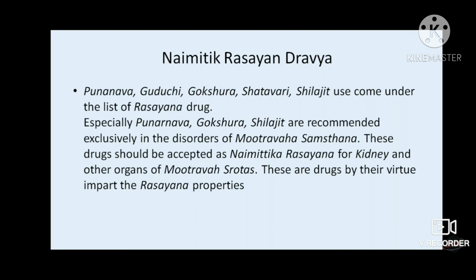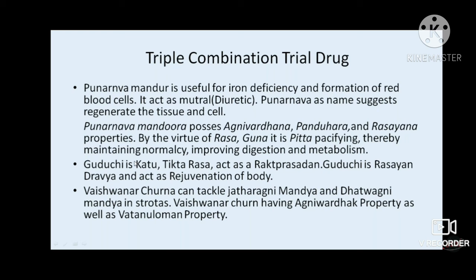For rasa chikitsa in chronic DKD, naimittika rasayana dravyas used are punarnava, guduchi, gokshura, shatavari, and chitaji. A triple combination of Punarnava Mandura, Guduchi, and Vaishvanara Churna has been tried by researchers. Punarnava Mandura is diuretic and helps combat iron deficiency. Guduchi is tikta rasatma, rakta prasadhana, and rasayana. Vaishvanara Churna relieves dhatvagni mandya. This combination is advocated along with Gokshuradi Guggulu and Shilajit.